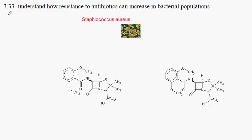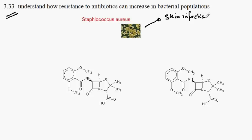IGCSE Biology Syllabus Statement 3.33 looks at how resistance to antibiotics increases in bacterial populations. The bacterial population in question is Staphylococcus aureus, which is known to cause skin infections and also some lung infections.